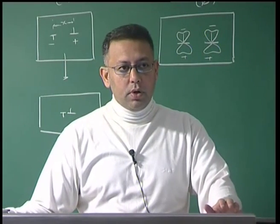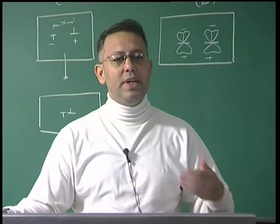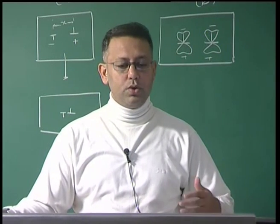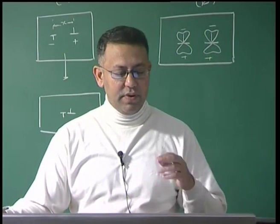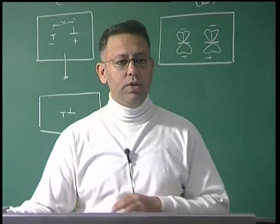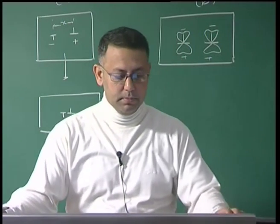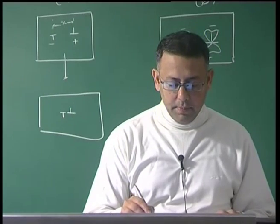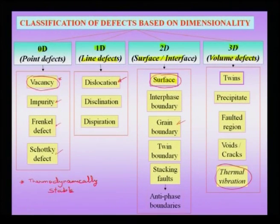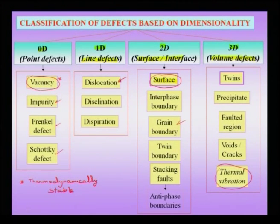The important one-dimensional defect is the dislocation, which we have briefly considered in terms of stress fields. There are other possible line defects like the disclination and dispiration, which we will not cover during this course. The important two-dimensional defects are the surface — which we have talked about, representing a region of higher energy and associated with both surface energy and surface tension — and the interface boundary between two phases.